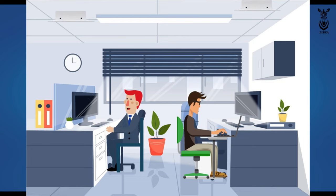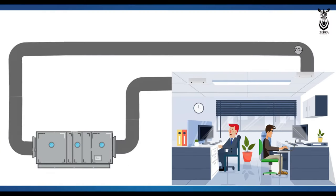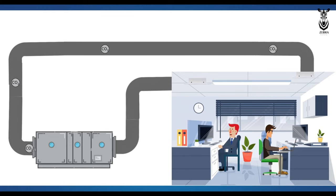What will happen if there is no ventilation? All the employees who work in an office breathe the oxygen in that room and release carbon dioxide. All this carbon dioxide goes to the AHU through the return duct, gets filtered there, and goes back to that room.